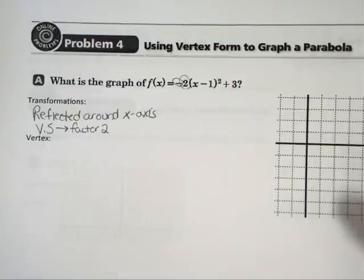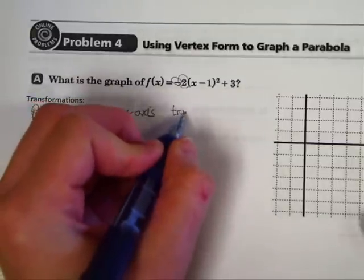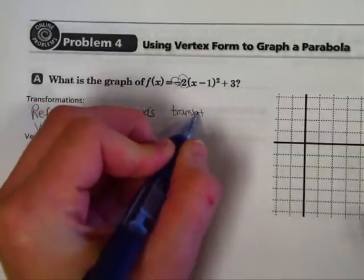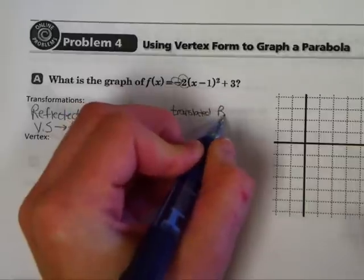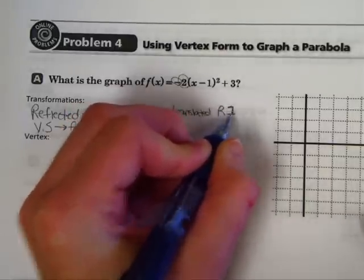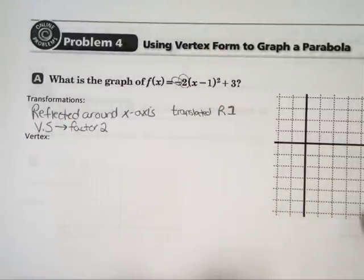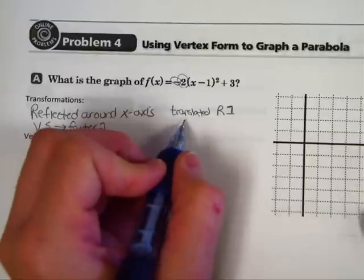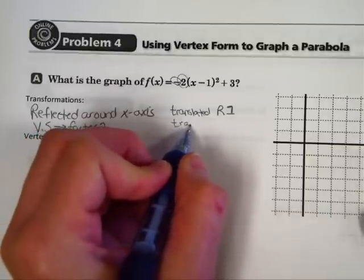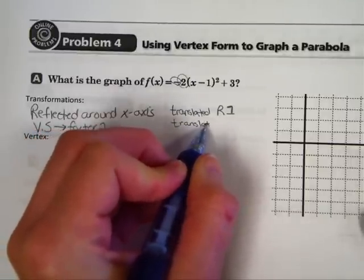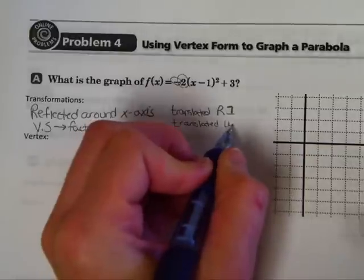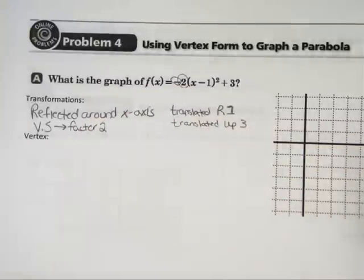The minus 1 on the inside states that it will move to the right. We're going to say translated, translated to the right one unit. And the plus 3 on the outside states that it's going to be translated up 3. So it's going to look upside down. It's going to look like it's been vertically stretched. It's going to move to the right one and it's going to move up 3.